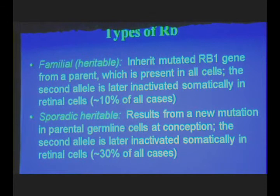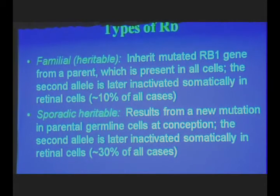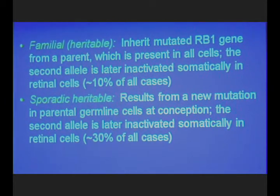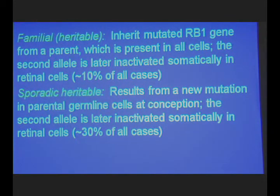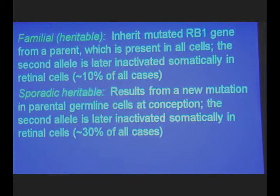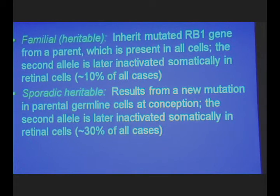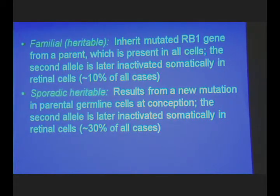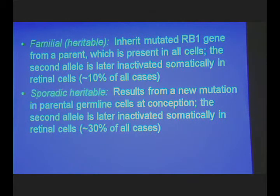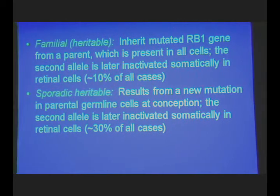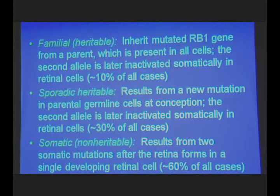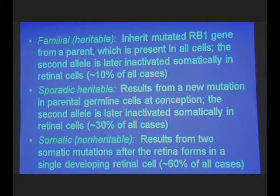The second type is called sporadic heritable, and this results from a new mutation in parental germline cells at conception. In other words, the gene isn't inherited from the parent — it's something that occurs at conception. Again, the second allele is later inactivated somatically in a retinal cell. This accounts for about 30% of all cases. The majority — about 60% of all cases — are called somatic, or non-heritable.